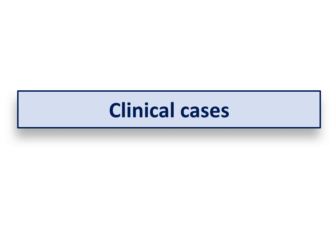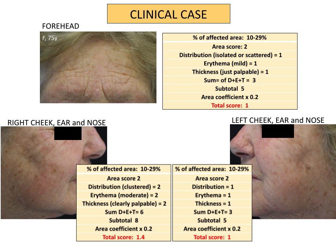Now let's see some examples of AK calculation. This is a female with no involvement of the scalp and isolated, just palpable lesions on the forehead with mild erythema, whereas on the right cheek the lesions are clustered, have moderate erythema and are clearly palpable. Therefore, the final ACASY score in this patient is 3.4, which is considered to be a light to moderate severity.